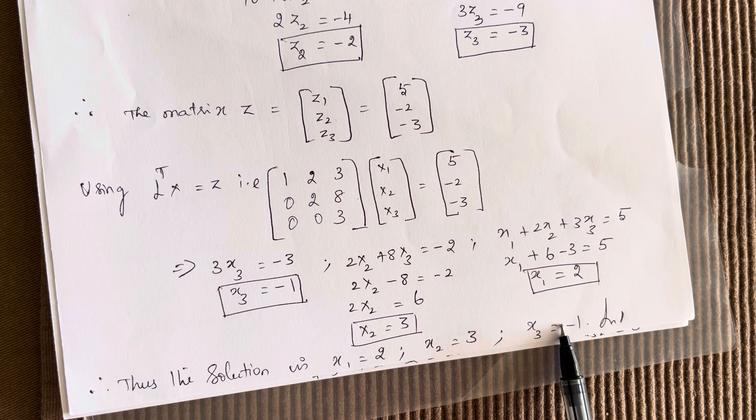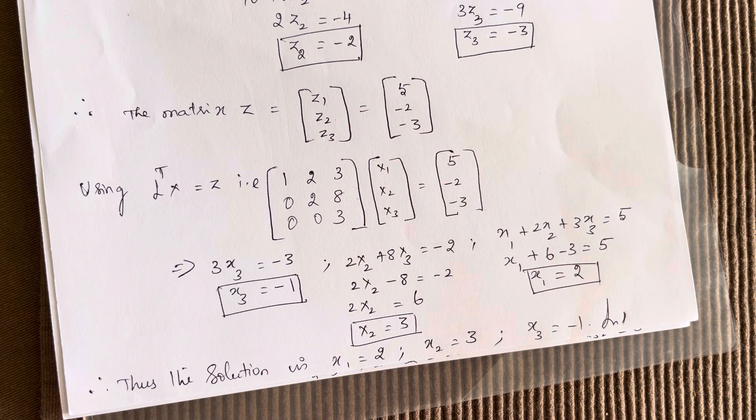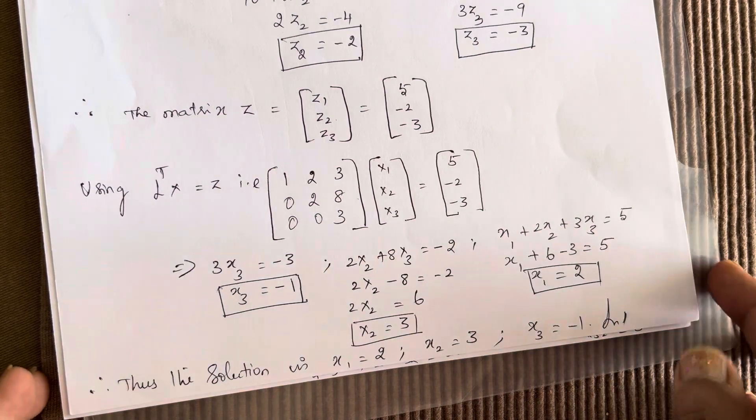The solutions are X1 equals 2, X2 equals 3, and X3 equals minus 1. This is how we solve using the Cholesky method. Thanks for watching; see you in the next video.